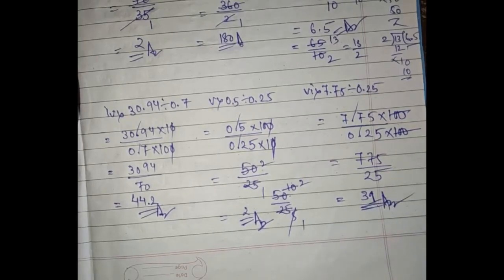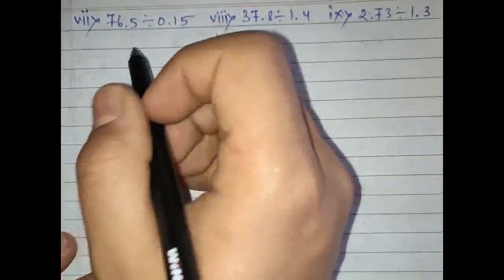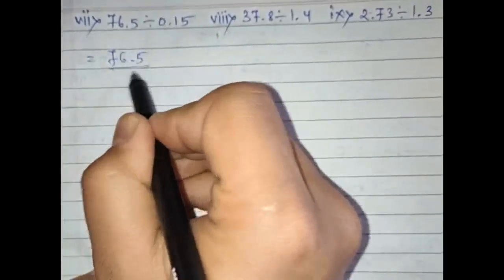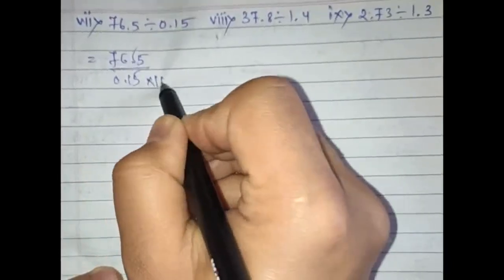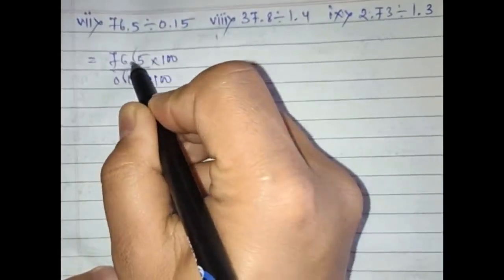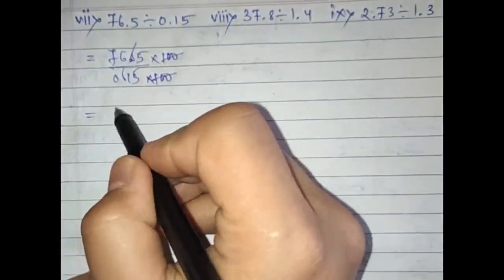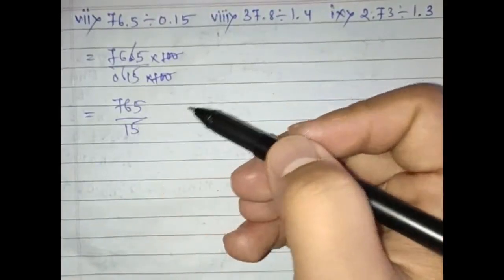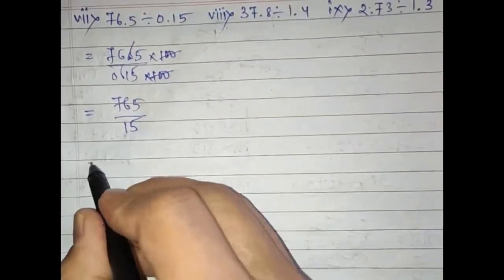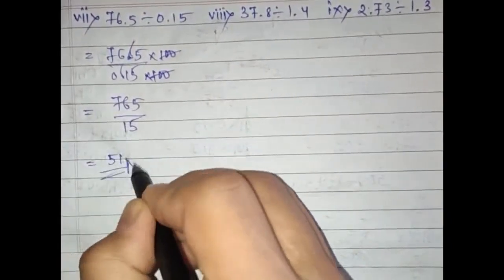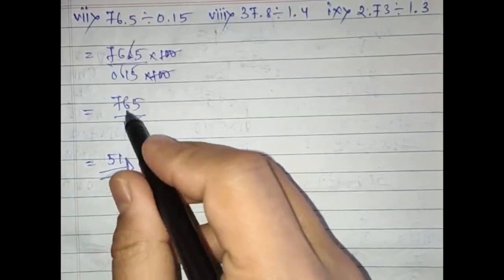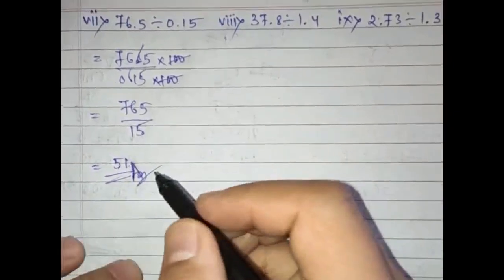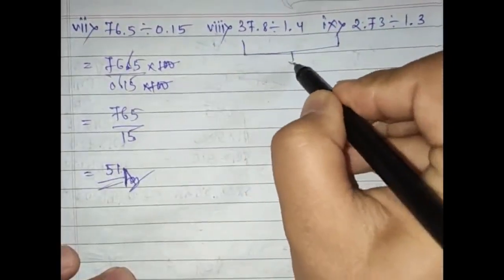Question number seven: 76.5 divided by 0.15. Remove the decimal point from 76.5 — write 10 below; remove the decimal point from 0.15 — write 100 above. The 100 and 10 cancel to leave 7650 divided by 15. Dividing gives 510, because 51 times 15 equals 765.